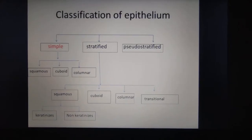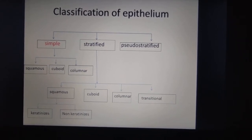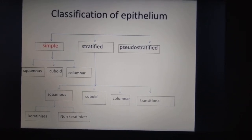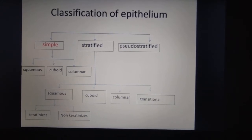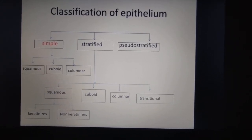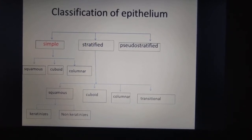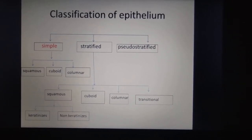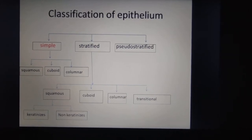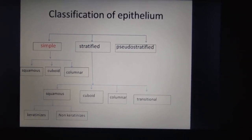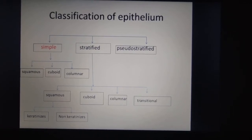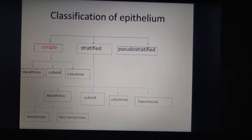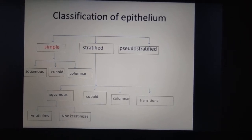Now let's look at the classification of epithelium. Epithelium is divided into simple epithelium and stratified epithelium. Simple epithelium is further divided into simple squamous, simple cuboidal, and simple columnar. Stratified epithelium — also known as compound epithelium — includes stratified squamous, stratified cuboidal, stratified columnar, and transitional epithelium. Simple means one layer; compound means two or more layers.